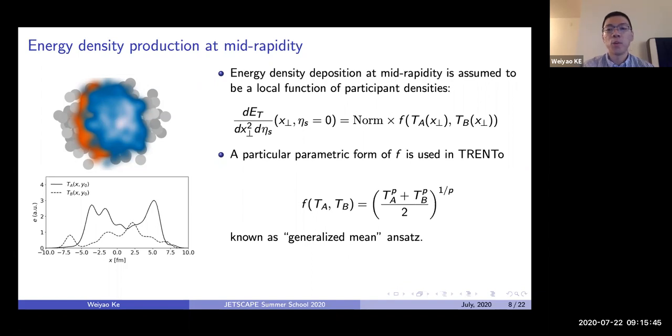Now comes the most important part of the TRENTo initial condition. We have decided how to sample binary nucleon collisions. We have determined which nucleons participate in the inelastic collisions. We want to use this information to determine the energy deposition at mid-rapidity. As I said, this should really be a dynamical process. But in TRENTo, we take this parametric approach. The energy deposition as a function of transverse location at mid-rapidity is assumed to be purely a function of T_A and T_B—basically the participant density from the target and projectile nuclei, up to some normalization factor that can be tuned to fit the multiplicity of final state particles.